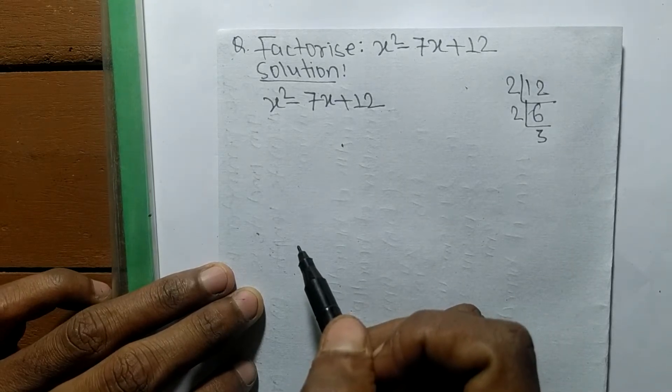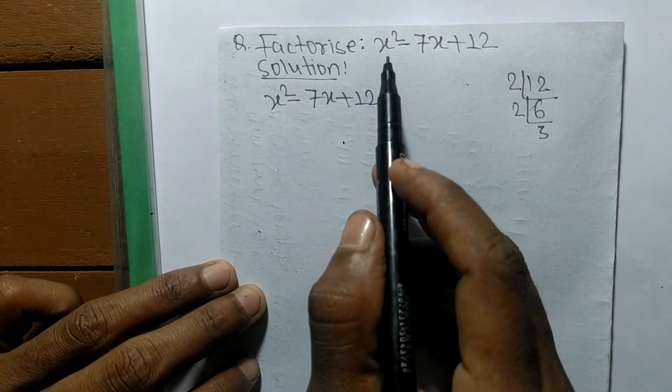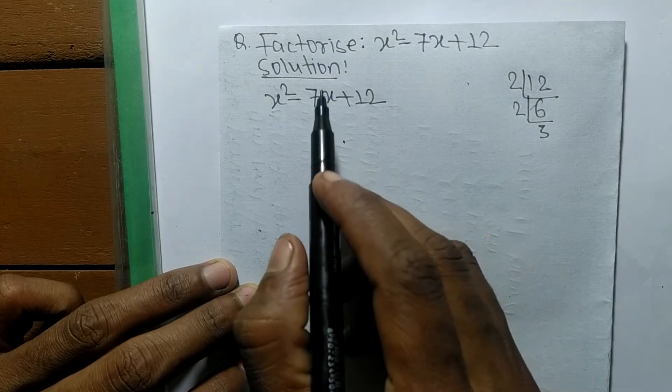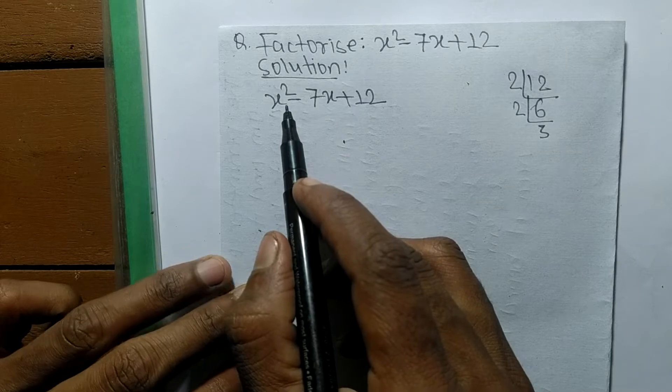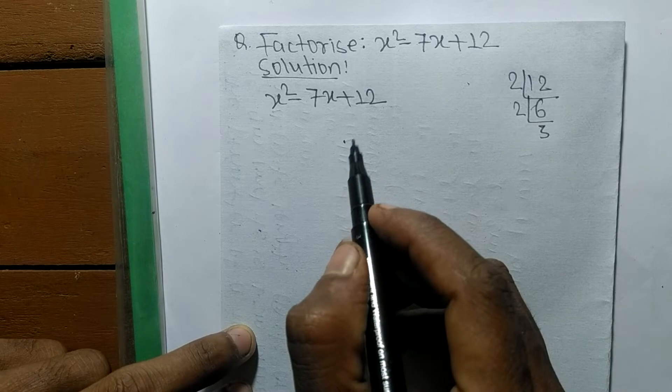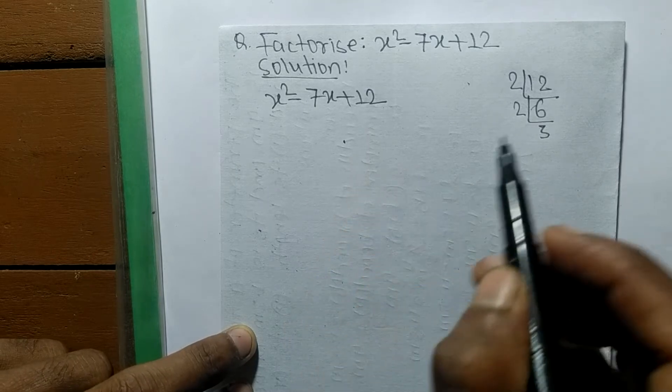So today in this video we shall learn to factorize x² - 7x + 12. For the solution of x² - 7x + 12, first we have to find out the prime factors of 12.